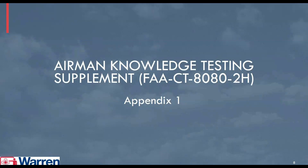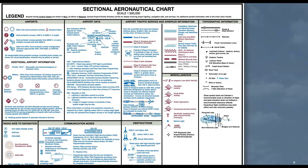When you're taking your tests, these can be difficult to remember. There is a legend provided on sectional charts and included in your Airman Knowledge Testing Supplement. You can get a copy free — it's the FAA-CT-8080-2H. They do update this, so make sure you have the most current version. Appendix 1 is like the legend that comes with the book you'll have while taking your test, and it can be very helpful.